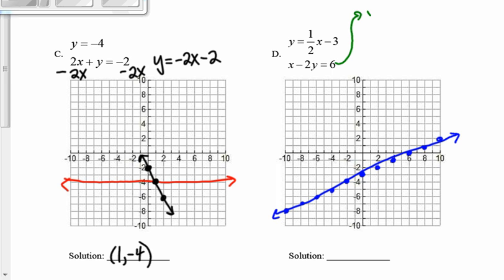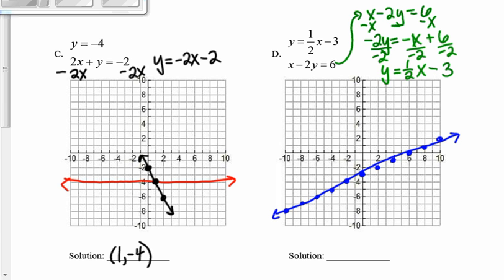Then I'm going to take this equation because I have to put it in slope-intercept form. I have to solve for y. I'm going to subtract x. So I have -2y equals -x plus 6. Then I'm going to divide everything by -2. So I get y equals—this would be -1x divided by -2, which would be a positive 1/2 x. A negative divided by negative is a positive, and that would be minus 3.